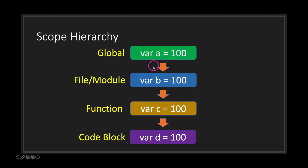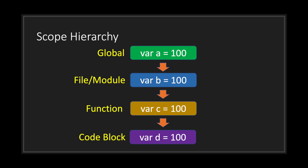Notice how we have arrows pointing from each scope. What this means is that a variable can propagate down to the scopes beneath it. However, variables declared at scopes at the bottom of the hierarchy do not propagate up — meaning when you declare a variable at a lower hierarchy level, you are not able to access it from above.